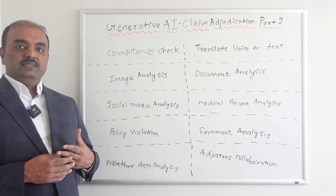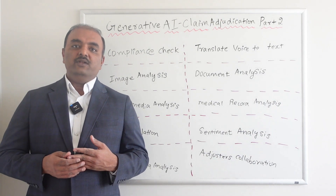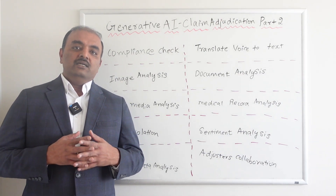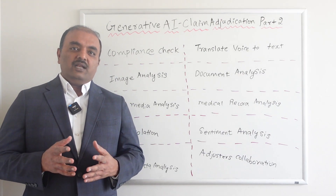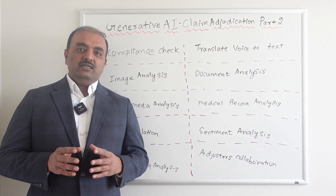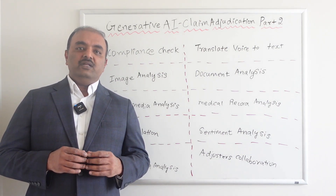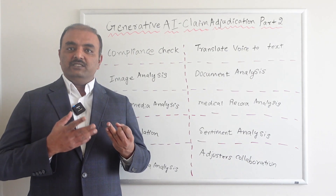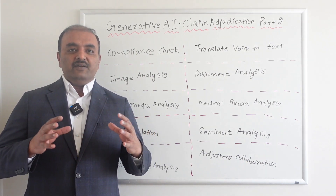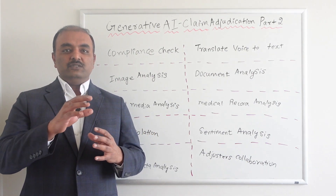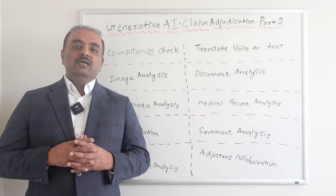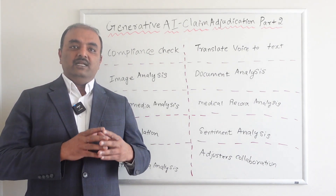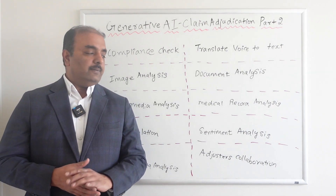Social media analysis is another use case. When there is a claim and an adjuster wants to determine whether it's a fraudulent claim or a valid claim, AI can read data from multiple social sources like Instagram, Facebook, and WhatsApp to decide whether it is a legitimate claim or if anything is missing from the claim.